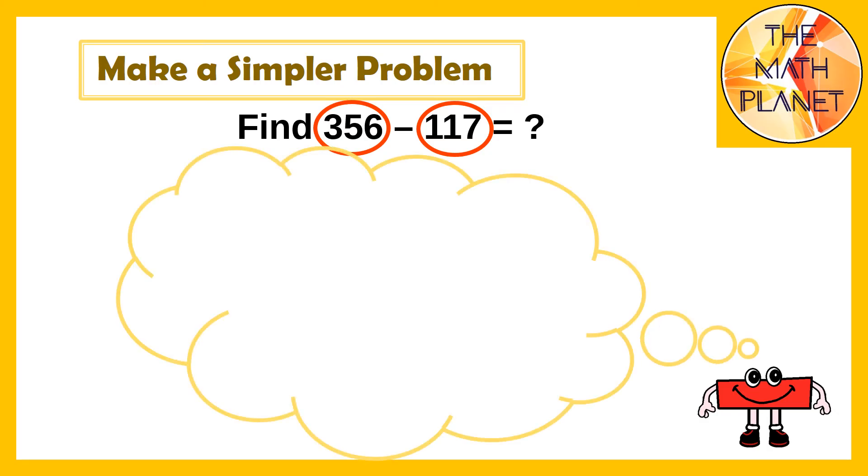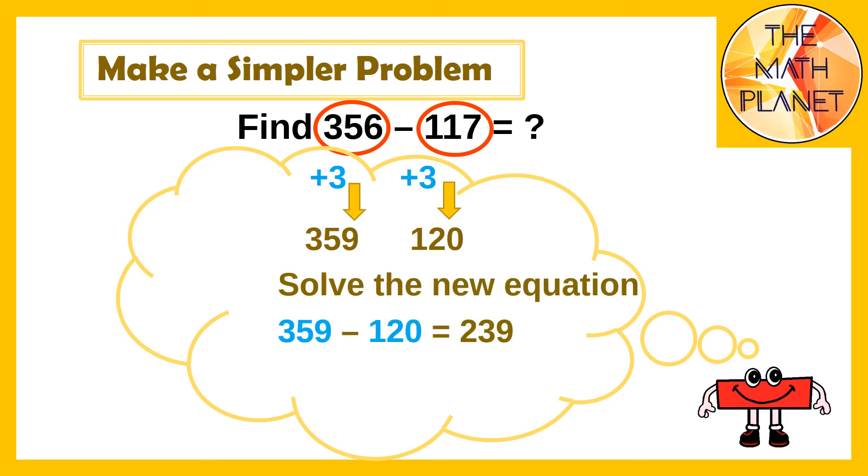So I will think of adding 3 to 117 to be 120 because this number is easier to subtract. And I will do the same to 356. I will add 3 more to this number. My new equation is what I need to solve. So I'll solve 359 minus 120 equals 239. And the result will be the difference or the answer to my equation.